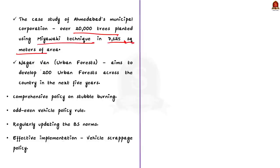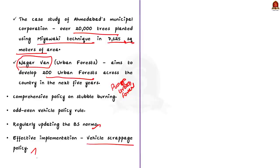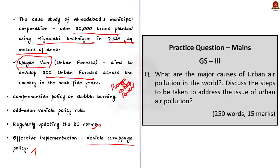The Government of India is implementing a scheme called Nagarvan, under which 200 urban forests are planned to be developed across cities in the next five years. A successful example is the Warje urban forest in Pune. Government can also take up a comprehensive policy on stubble burning, odd-even vehicle policy, regular updating of BS norms, and effective implementation of vehicle scrappage policy to combat urban air pollution. That's all regarding this discussion — we saw the causes and steps to address urban air pollution.